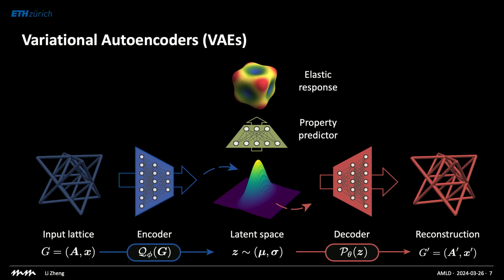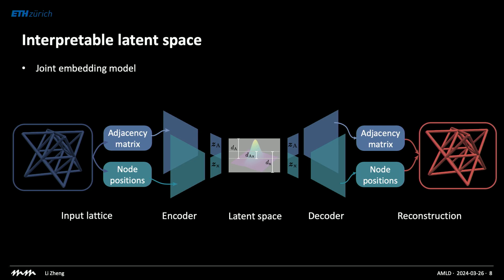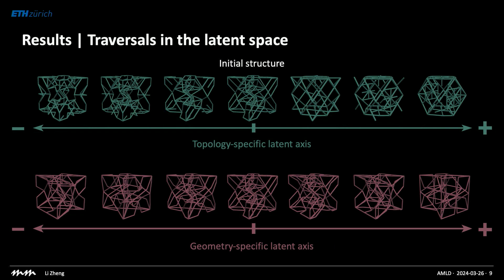The hope is that we can do optimization in the latent space towards target properties, and whichever point we pick from the latent space should almost always give us a valid structure. Beyond that, we also want to give this latent space physical meaning by disentangling the latent representations into different physical quantities. For example, specific dimensions in the latent space are exclusively connected to the connectivity or to the node positions. By manipulating different latent dimensions, we can generate distinct structures with different properties, making the latent representation a meaningful structural representation of the original discrete design space.